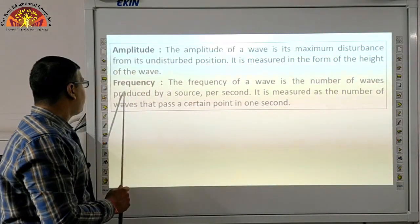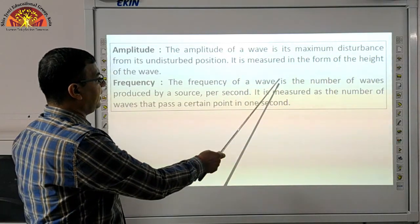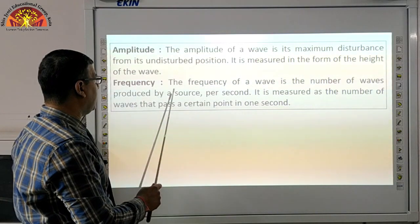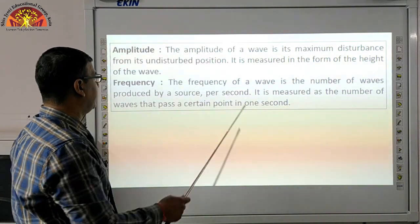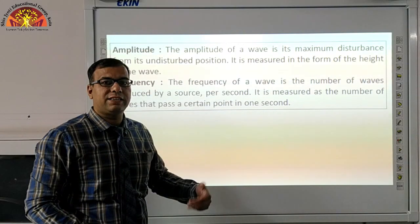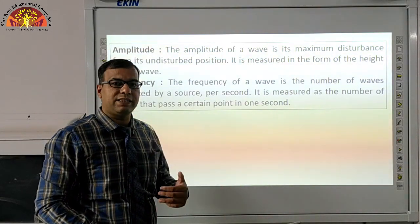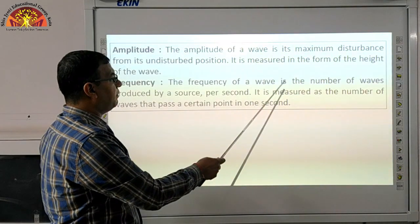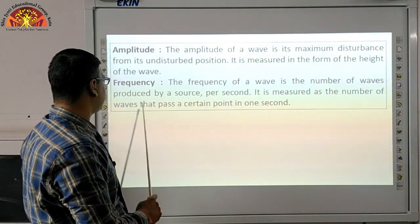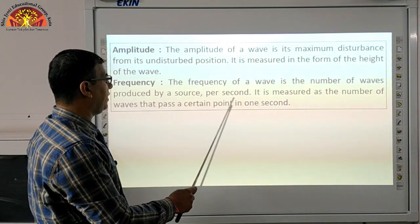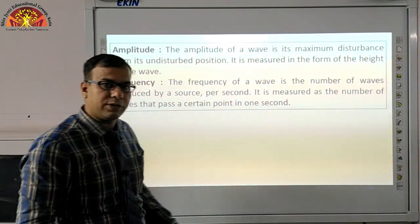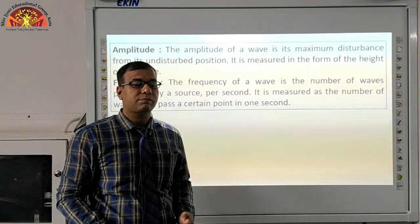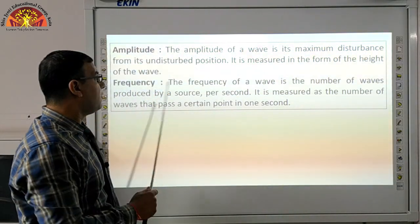Next is frequency. The frequency of a wave is the number of waves produced by a source per second — meaning, how many waves are coming out from any source in one second. It is measured as the number of waves that pass a certain point in one second. So how many waves pass per second from a particular source — that is frequency.